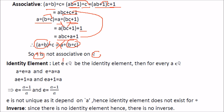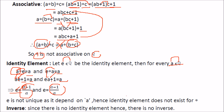For the identity element, assume e belongs to Q such that a star e equals a. Using the operation: ae plus 1 equals a, giving e equals (a minus 1) by a. Since e depends on a, it is not unique. Therefore there is no identity element for star, and since there is no identity element, there is no inverse either.